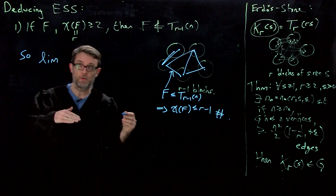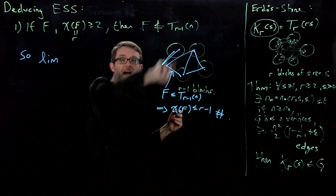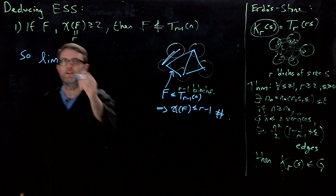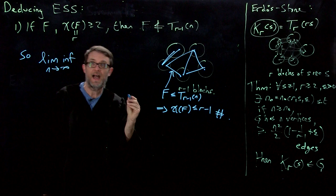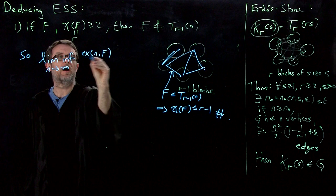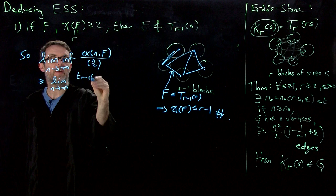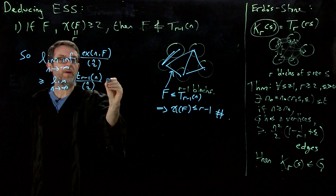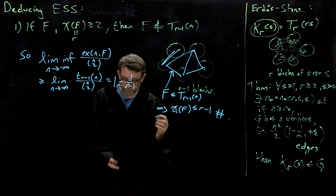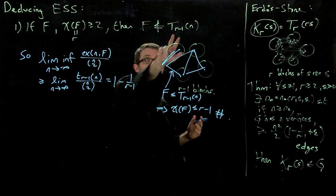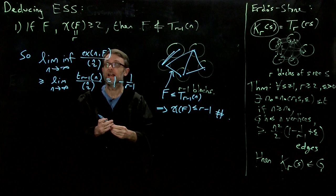This tells me something about the extremal number from below: I have at least this many edges and can still avoid an appearance of F. Since I don't a priori know the limit exists, I write that the lim inf as n goes to infinity of ex(n,F) / n-choose-2 is at least the limit — which I know exists — of the number of edges in the Turán graph with r minus 1 classes divided by n-choose-2. And that limit is exactly 1 minus 1 over r minus 1.